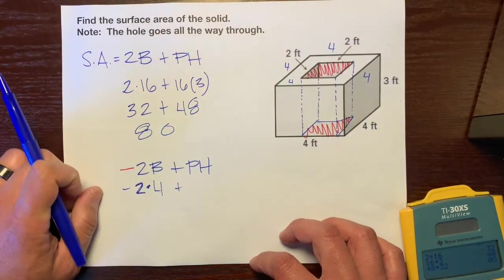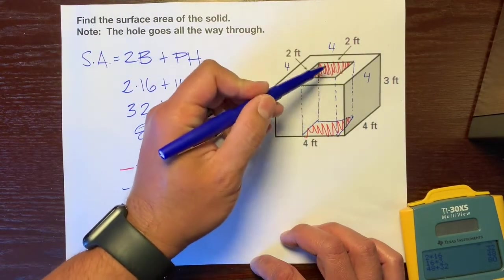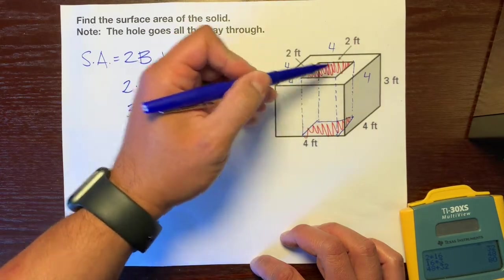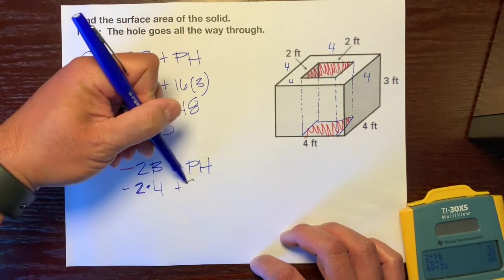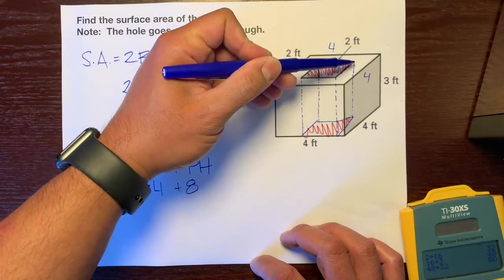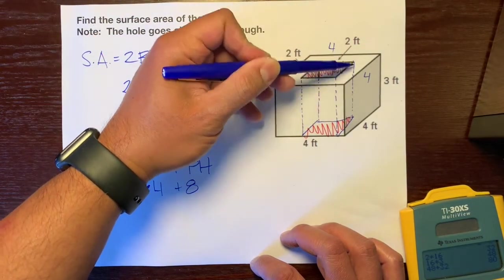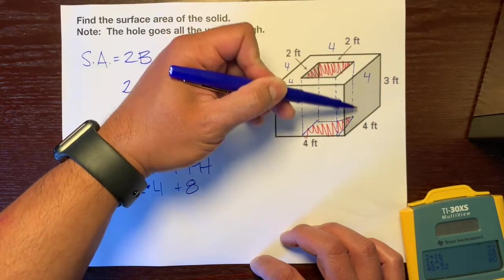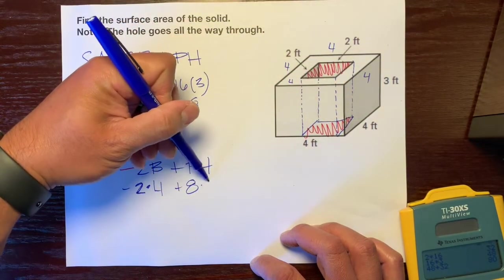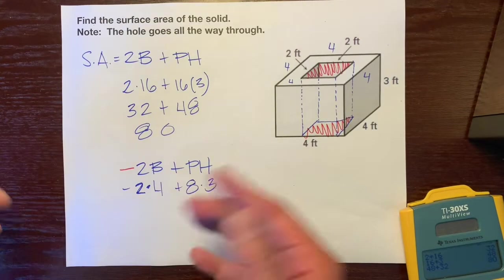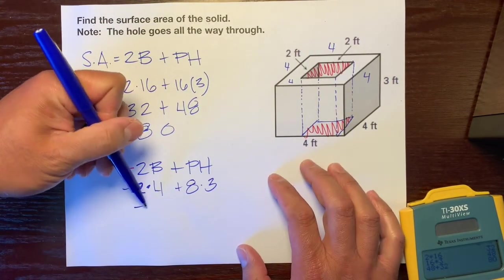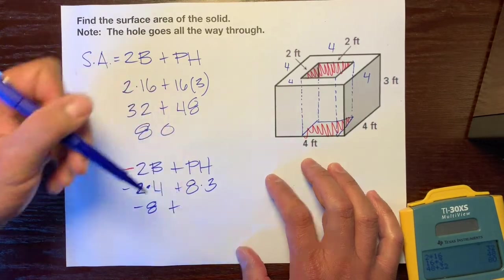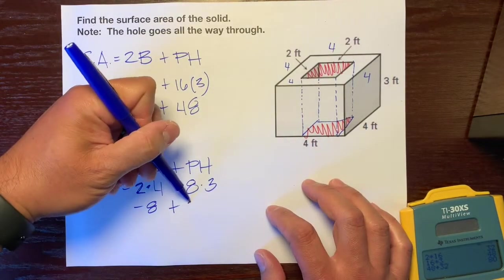Plus P is base perimeter, and we use the top and bottom to be our bases. So 2 plus 2 plus 2 plus 2 is 8. The distance between these two is the same as this length, so it's 3. Let's multiply: negative 2 times 4 is negative 8, plus 8 times 3 is 24.